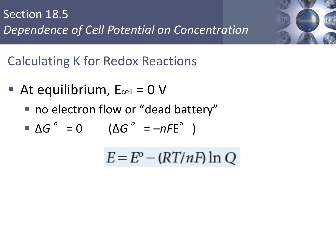At equilibrium, the cell potential is 0 volts — we call this a dead battery because there is no electron flow. Using the equation from the last section with a cell potential of 0, delta G also equals 0. We've discussed how delta G at equilibrium is 0. So at equilibrium, there is no driving force to push electrons through — that's what 0 volts means — and no work is possible because delta G is 0.